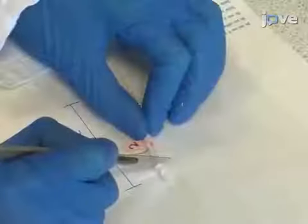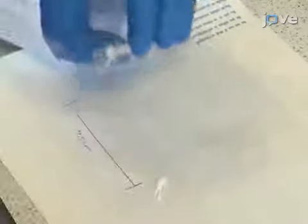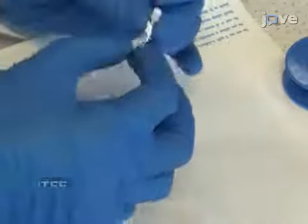Once dry, use a scalpel to cut the silicone so that it is flush with the glass module ends. Lastly, wrap about four layers of polytetrafluoroethylene tape around one side port.